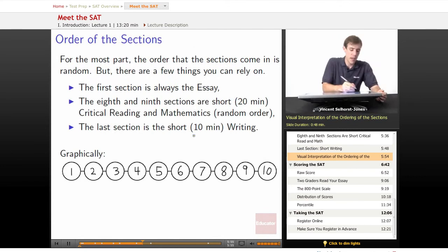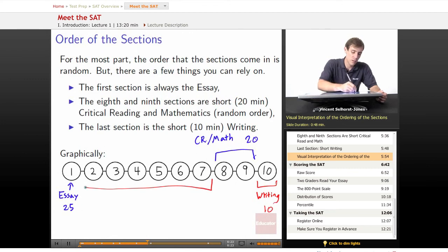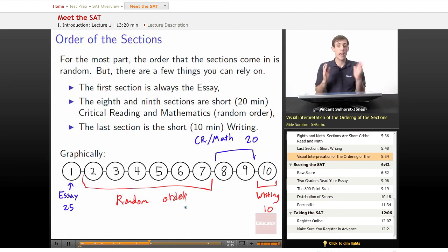If we were to turn it into a picture, then we would start off with essay at the very beginning, weighing in at 25 minutes. At the end, we will wind up having critical reading and math, not sure what the order is, but we do know they'll each be 20 minutes. And at the very, very end, we'll have a writing section at 10 minutes. And all the stuff in the middle, that is what you don't know the order of. So, random order. That's going to be where the bulk of the test will show up. And you don't really have any idea of how it's going to be ordered in there, but don't really worry about it too much. You just want to do the best you can on every section as you see it.